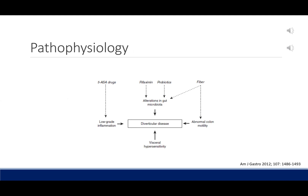In the beginning, we thought of diverticular disease in more anatomical terms — high intraluminal pressures causing herniation at points of weakness, then mechanical obstruction or local trauma to diverticula leading to diverticulitis. Our thinking has changed to also consider abnormal colonic motility, visceral hypersensitivity, low-grade inflammation, and alterations in gut microbiota.